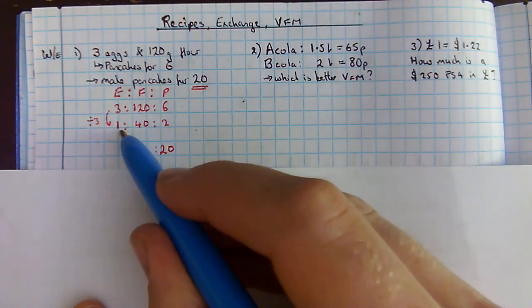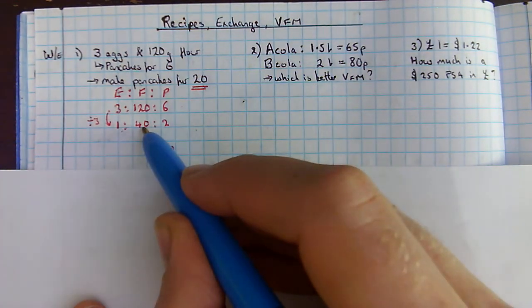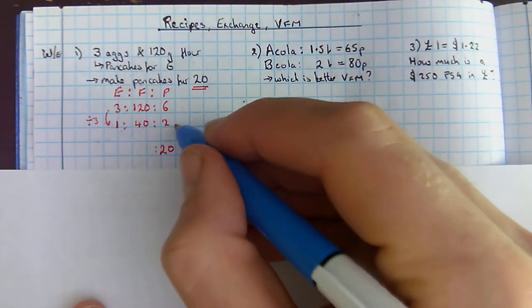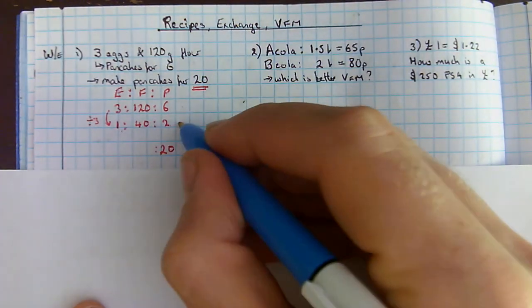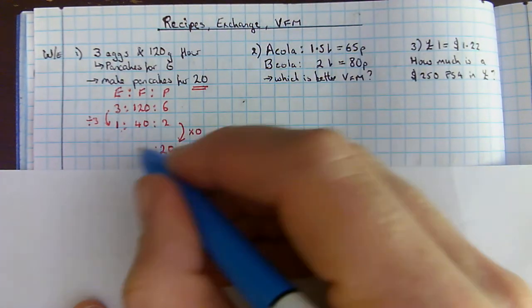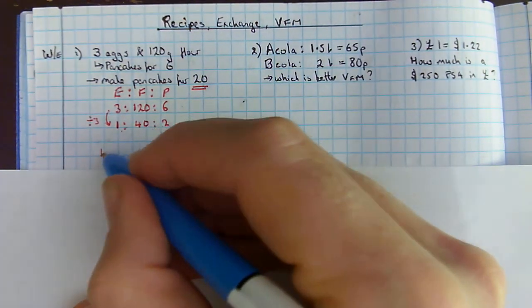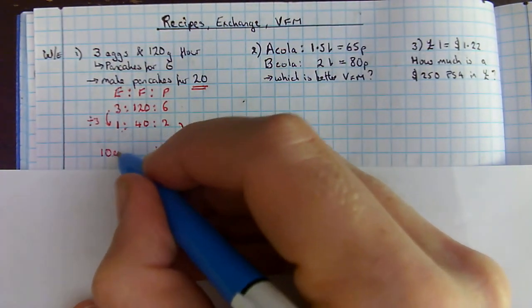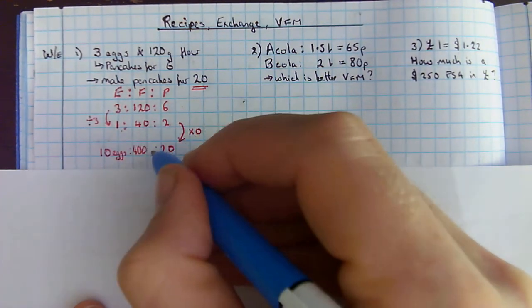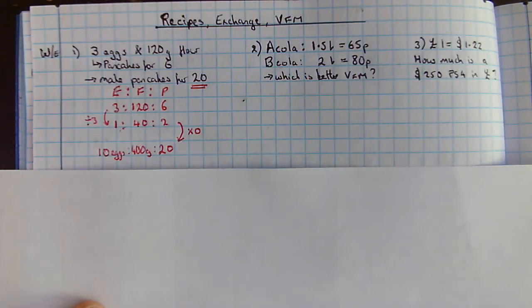So one egg, 40 grams of flour would make pancakes for two. That's now really easy for me to get up to 20 people. I've just times it by 10. And it tells me I need 10 eggs, 400 grams of flour. And that would feed 20 people.